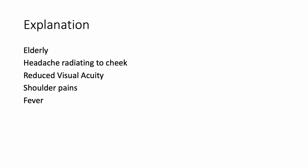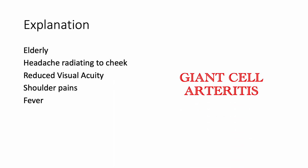Let us dissect the scenario. It's an elderly lady with a headache radiating to the cheek. There is reduced visual acuity but eye movements are not painful. There is shoulder pain and malaise, and fever is present as well. The right diagnosis here for an elderly patient with a headache radiating to the cheek and reduced visual acuity — this is a classical presentation of giant cell arteritis.